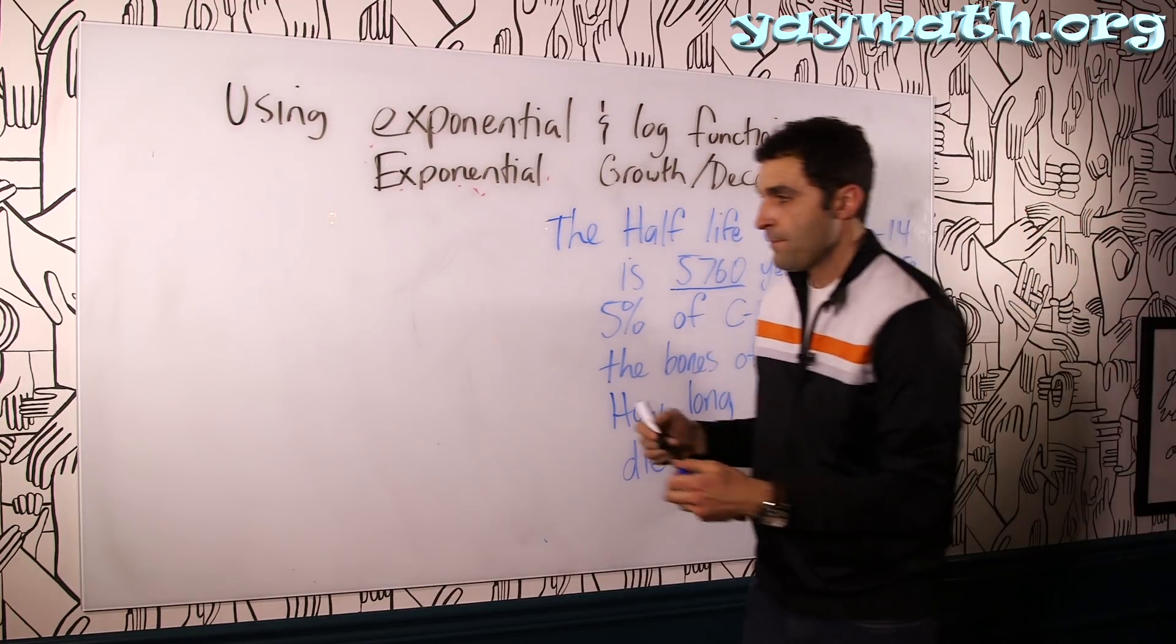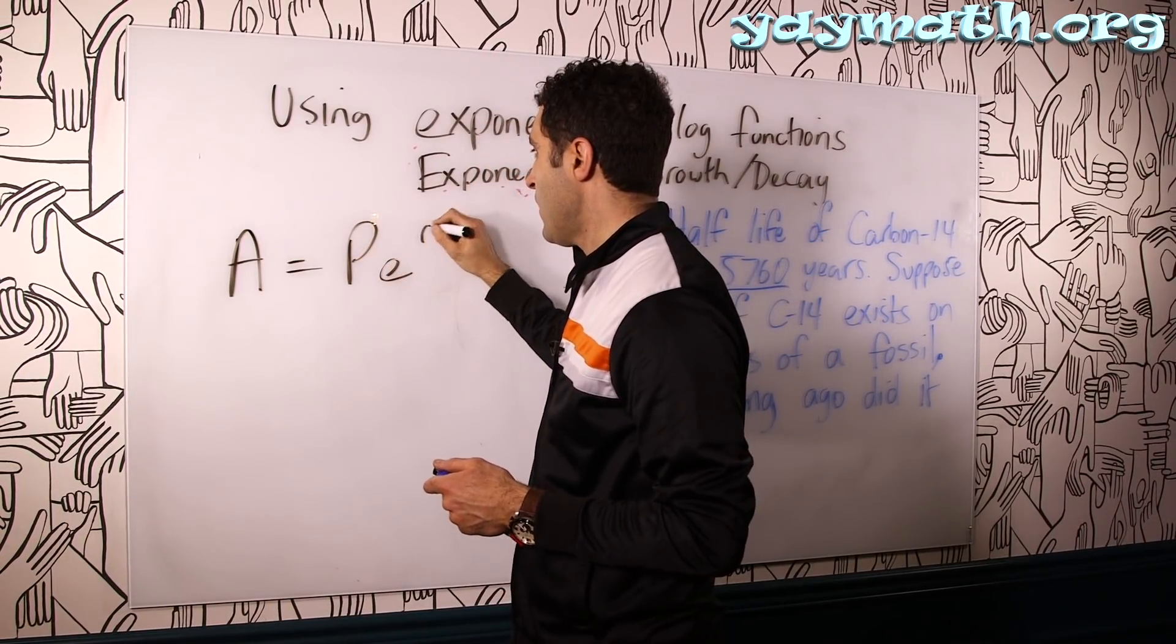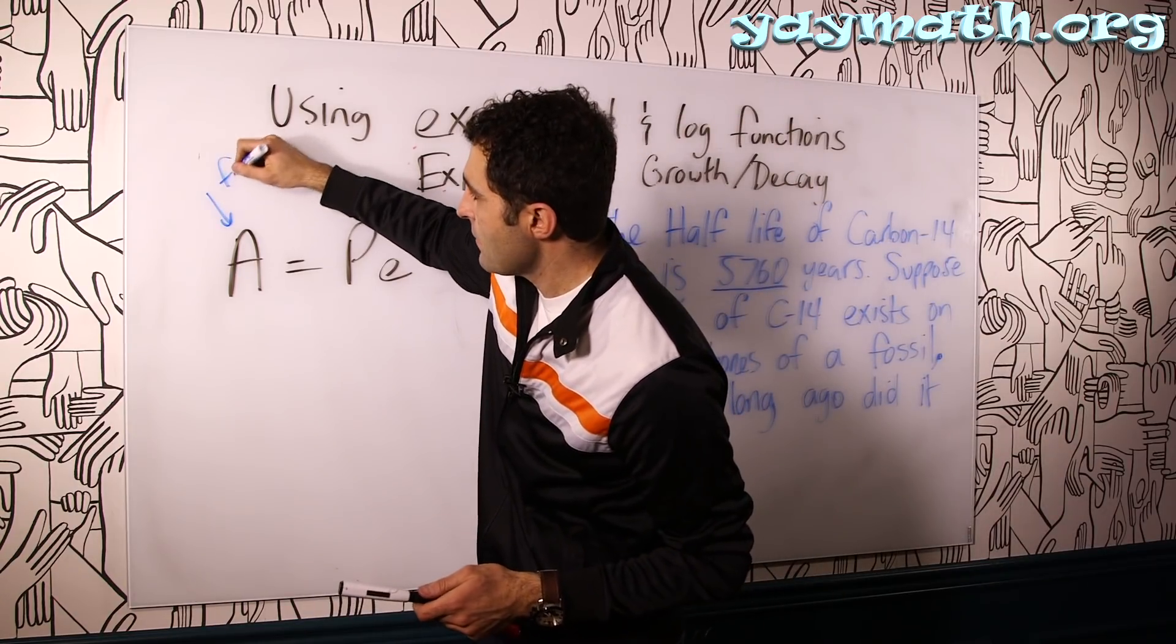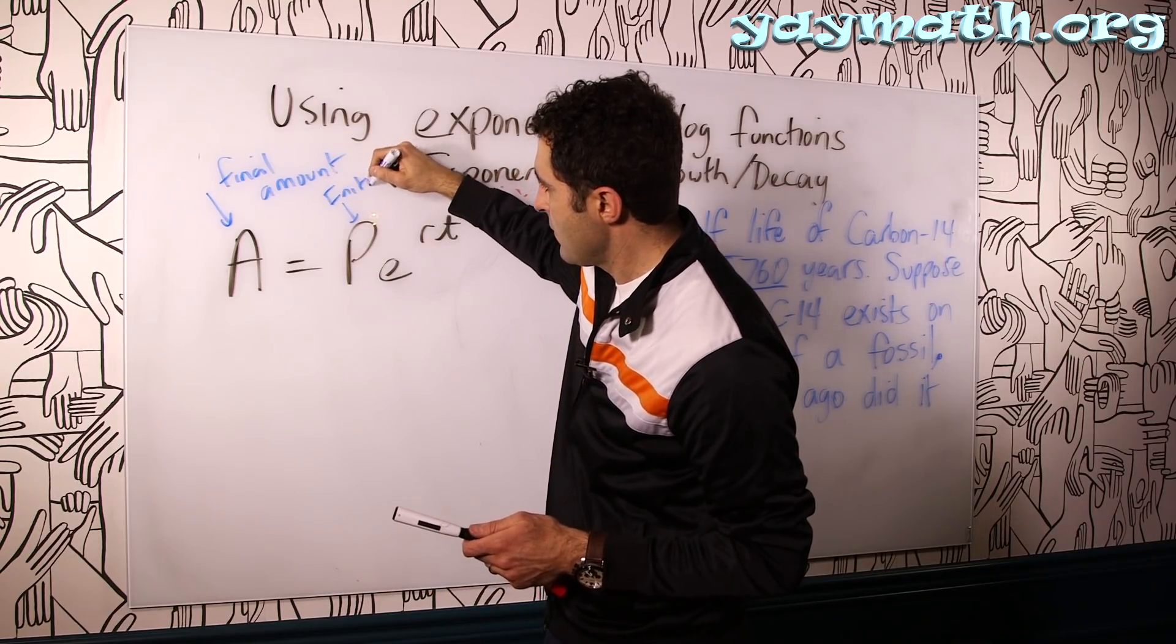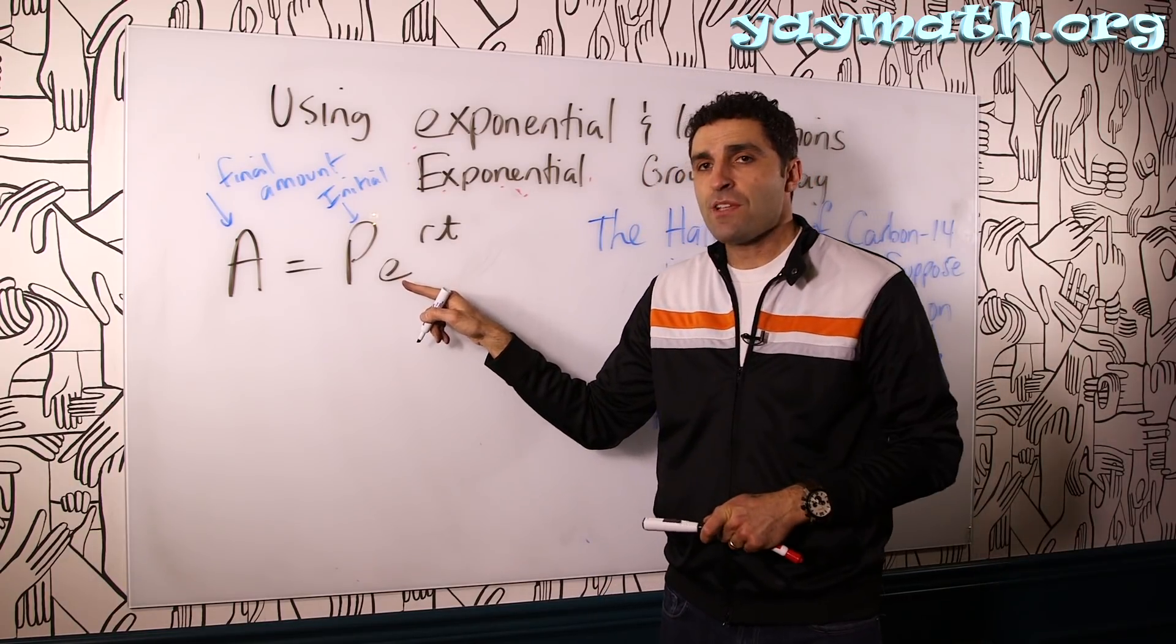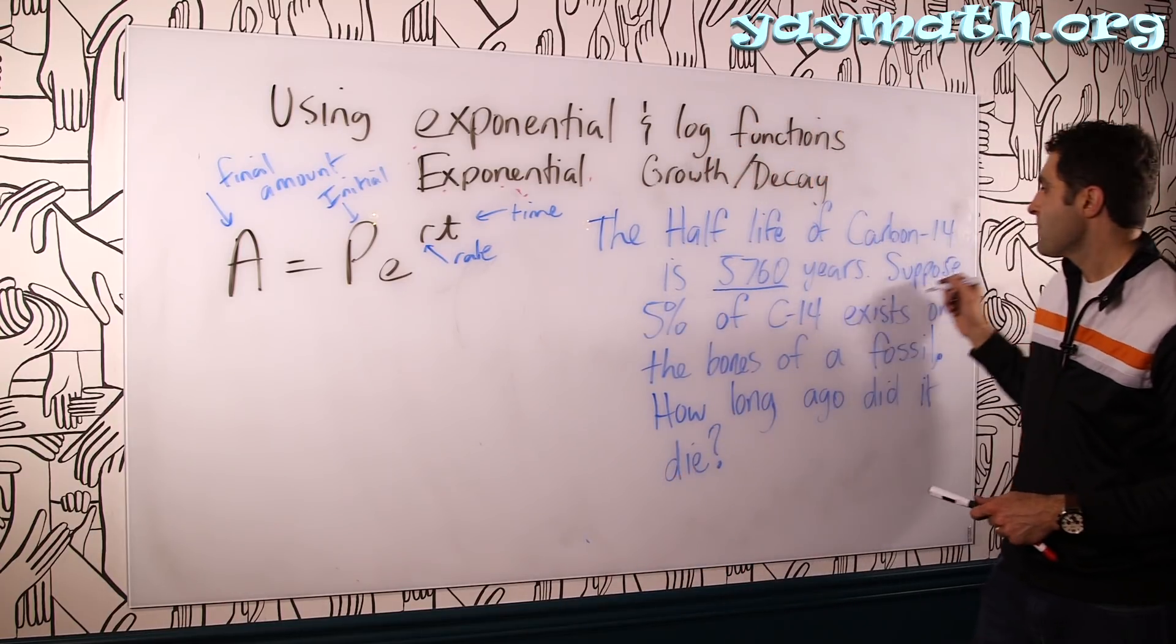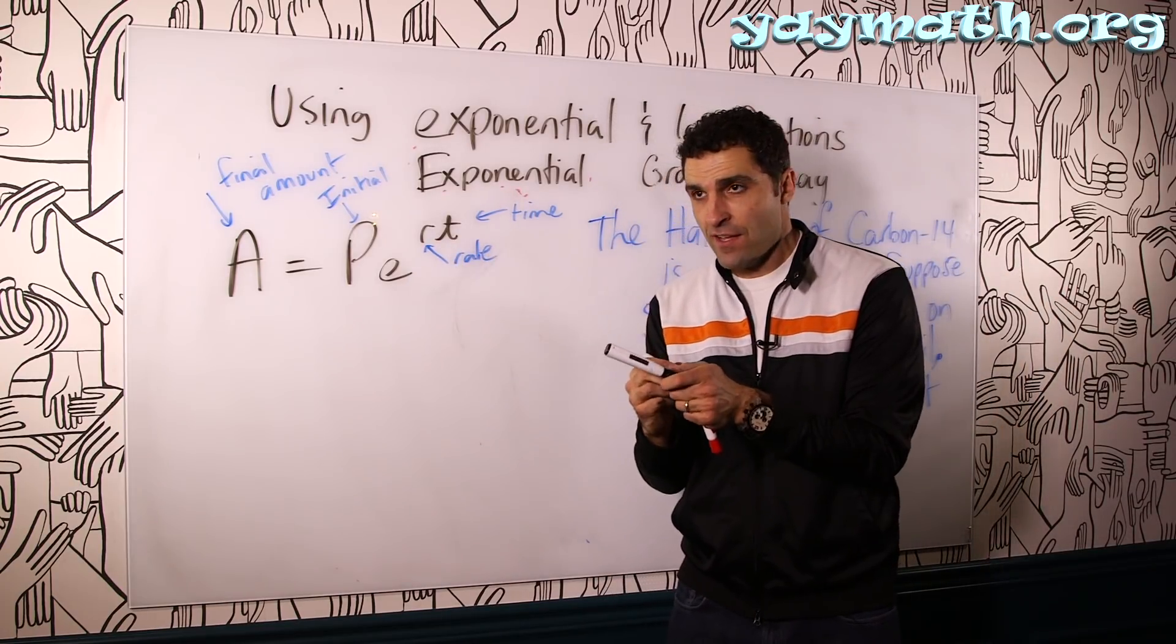So what we need to do is we need to understand the rate of decay of this particular fossil. Let's introduce the formula for that. Students call it APERT. A equals P-E-R-T. This is just like the formula from before. You'll notice this end amount here, this is the final amount. This is the initial. It's also called the principal, the starting amount. This is E, the exponential function we talked about before. This is the rate. And this is the time. In this case, time will be measured in years. So what we're going to do first is we're going to find the rate of decay of this fossil. Let's do it.